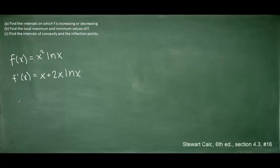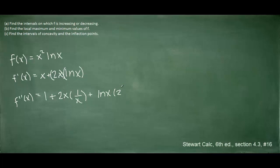Part c asks us to find the intervals of concavity and the inflection points. We proceed similarly to how we found the increasing/decreasing intervals, but now we compute the second derivative. The derivative of x is 1. Here we have a product again — 2x multiplied by the natural log of x — so we use the product rule again: the first function times the derivative of the second, plus the second function times the derivative of the first. We then cancel the x's, move the 2 out front, and combine to simplify.